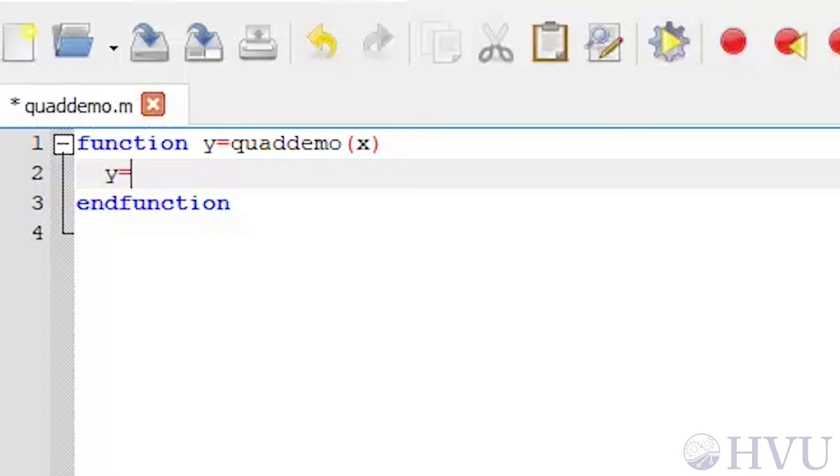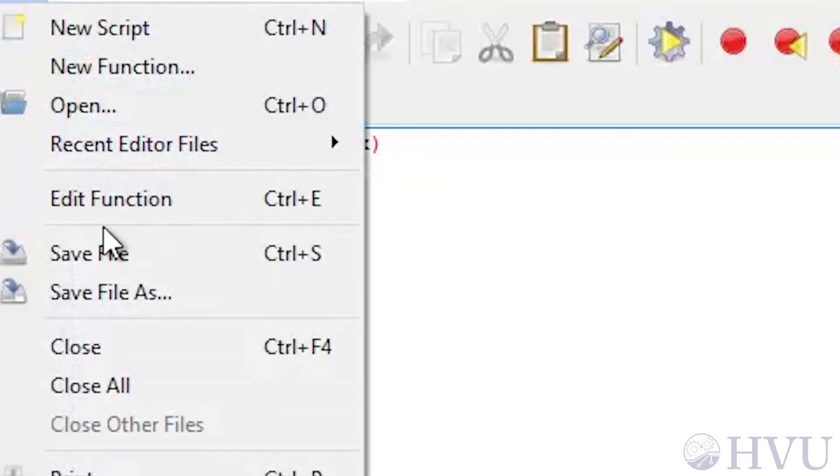The function needs to be able to accept array inputs and return arrays, so my function is y equals x dot caret squared plus one. The array operator is important. I'll save the file and return to the command window.